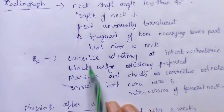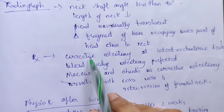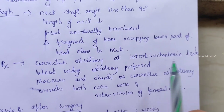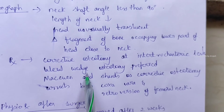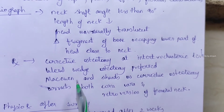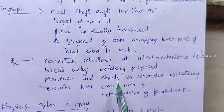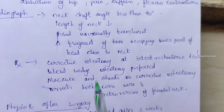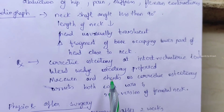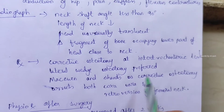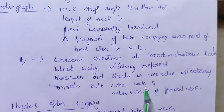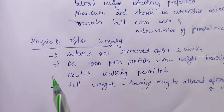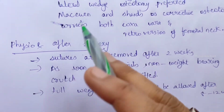The treatment is corrective osteotomy. This is performed at the intertrochanteric level. Lateral wedge osteotomy is preferred. McWell and Shan's corrective osteotomy is also used, as it corrects both coxa vara and retroversion of the femoral neck.